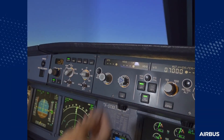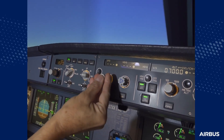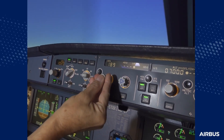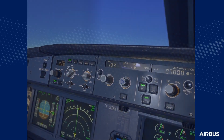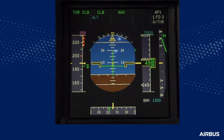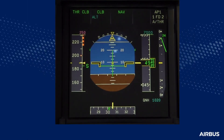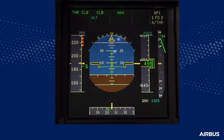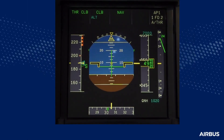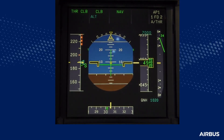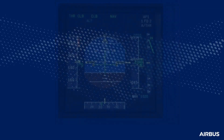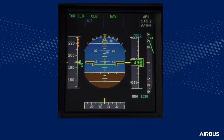The first action of the pilot flying will be to pull the speed knob to change from managed to selected speed. This action will stop the acceleration of the aircraft and avoid exceeding the maximum speed for the current slat-flap configuration. Remember that the aural overspeed alert and the VLS displayed on the PFD are computed based on the real slat-flap position.